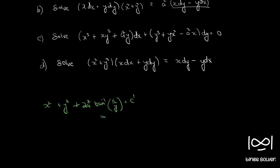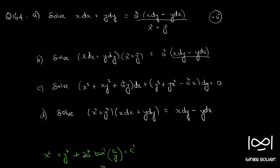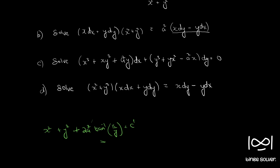If you observe part B and compare it with part A, you can see that B is exactly the same as A. It's just that if you multiply the LHS and RHS by x squared plus y squared in question A, you get question B. Or if you divide B by x squared plus y squared on both sides, you get question A. So A and B will have the same answer: x squared plus y squared plus 2 A squared tan inverse x by y equal to c dash.